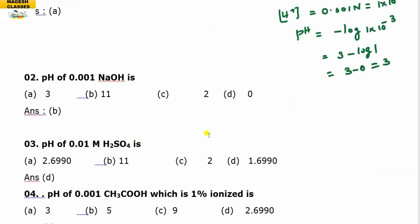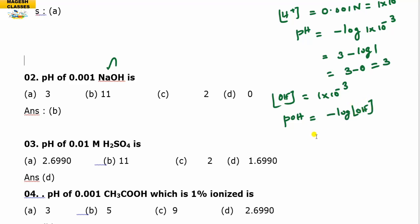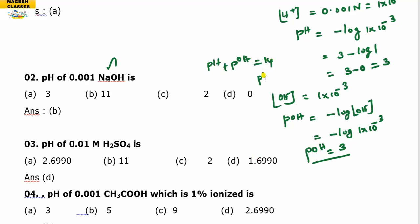Next: the pH of 0.001 N NaOH. Since this is a sodium hydroxide solution, the hydroxyl ion concentration is 1×10⁻³. pOH = −log(1×10⁻³) = 3. Using pH + pOH = 14, therefore pH = 14 − 3 = 11. Your answer is B.